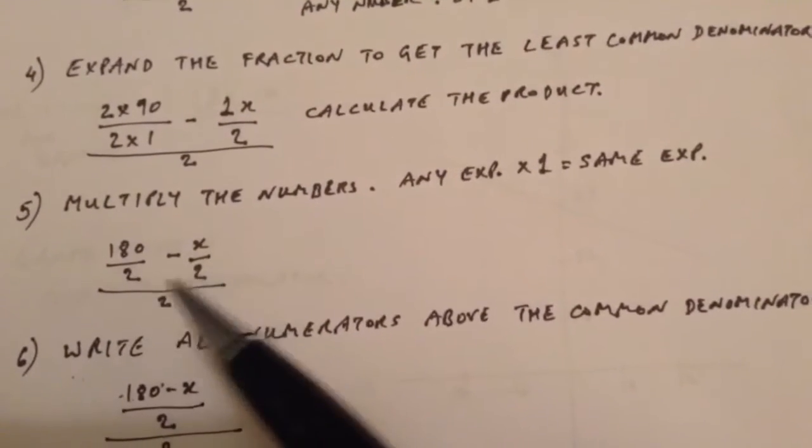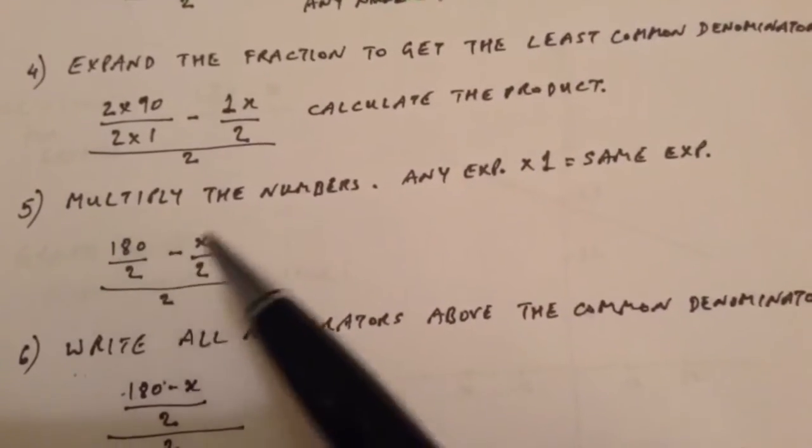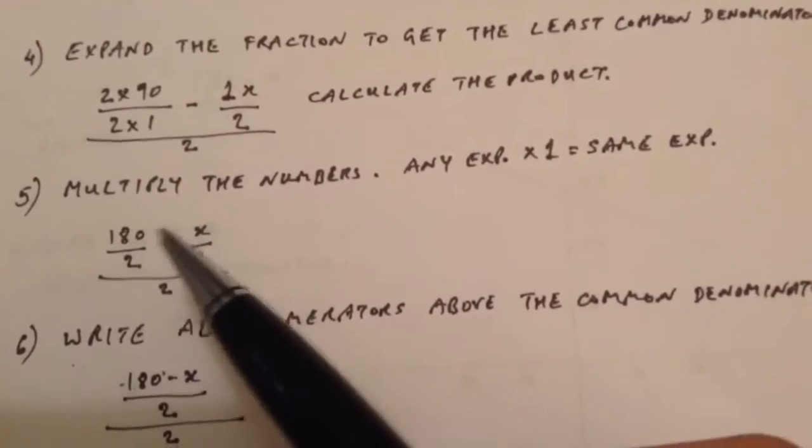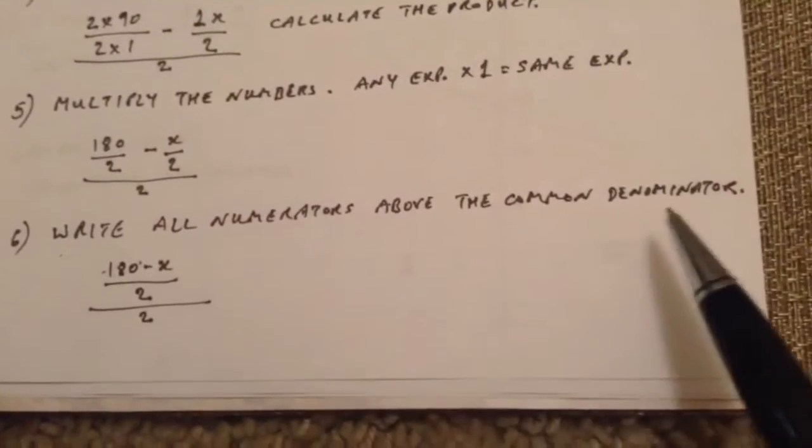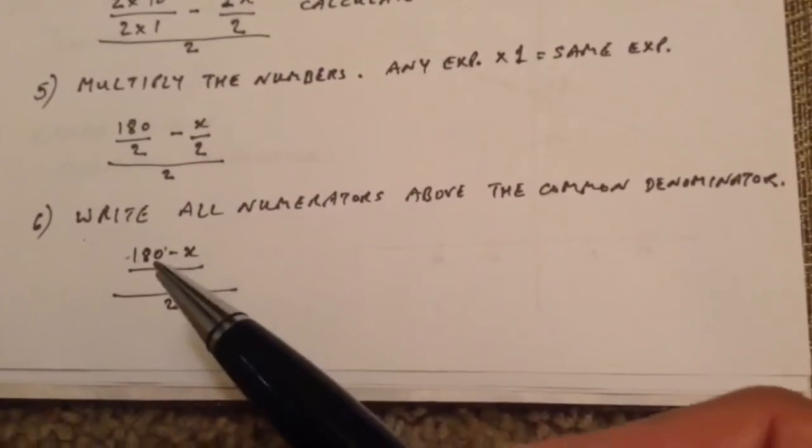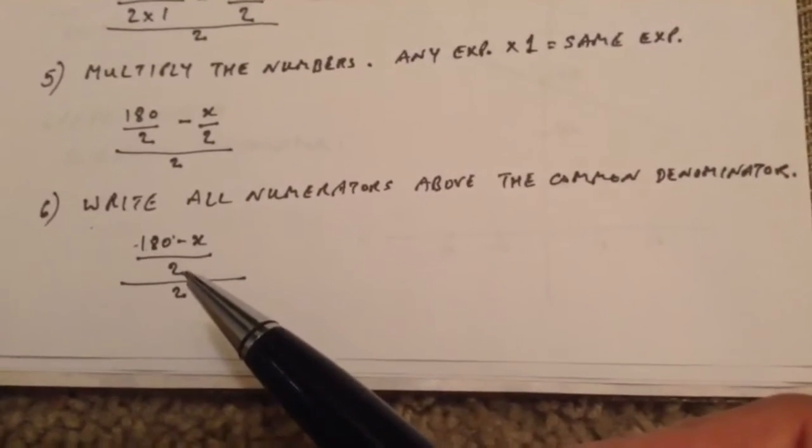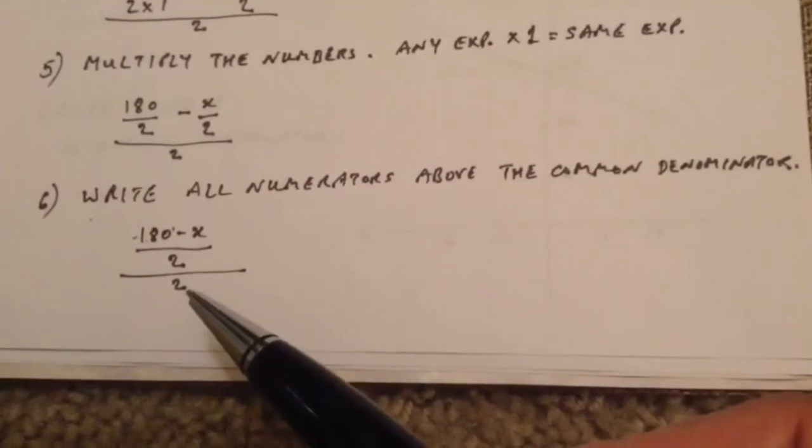So now since the denominators are common, we can work on the numerators. So here we have, write all the numbers above the common denominator. So 180 minus x can be written together with the common denominator. We still have the divide by 2 part to be addressed.